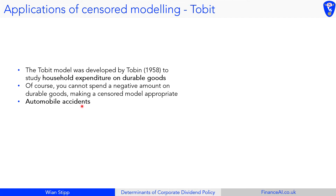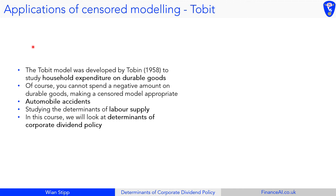Another case is automobile accidents — if you're trying to look at what determinants contribute to damage in an accident, such as drink driving, speed, or weather, you can't have negative damages. That's why the Tobin model is used there. Similarly, you can't supply negative labor. In this course, we're looking at the determinants of corporate dividend policy.